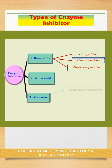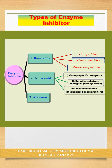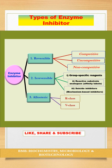Irreversible inhibitors are either group-specific reagents, reactive substrate analogs, or suicide inhibitors. The two classes of allosteric enzymes are K-class and V-class.